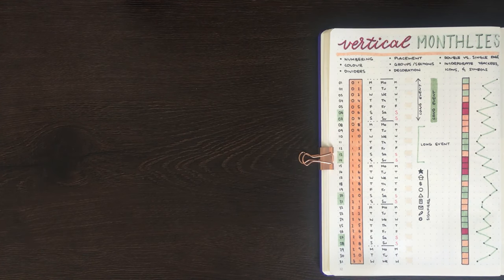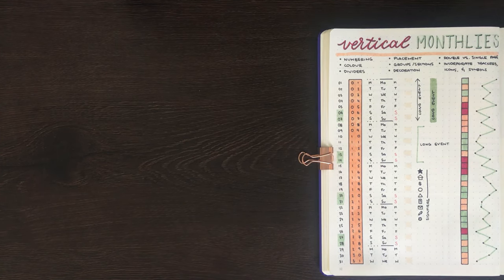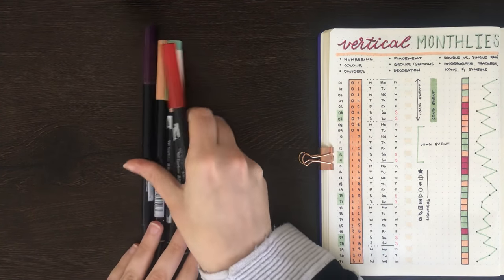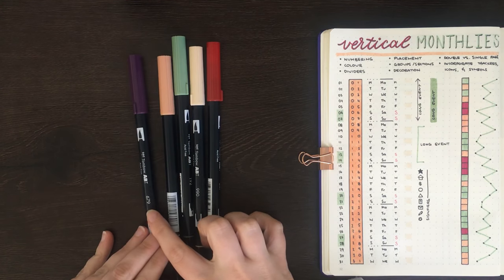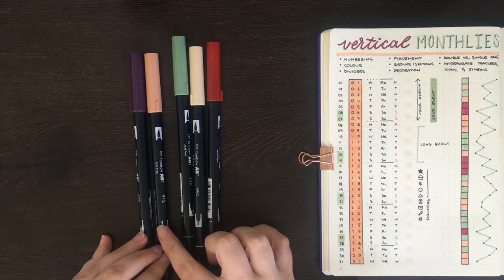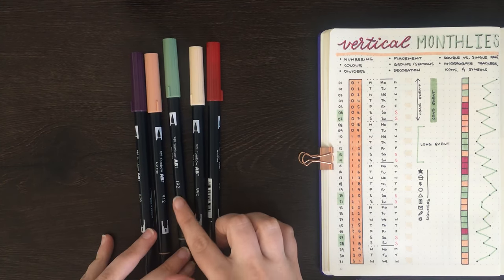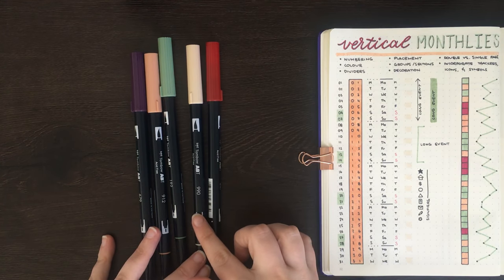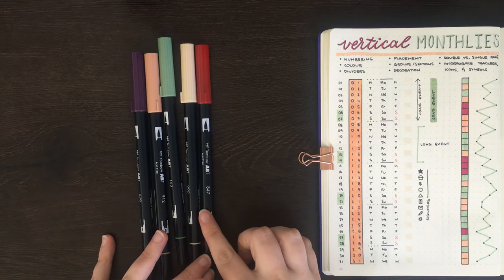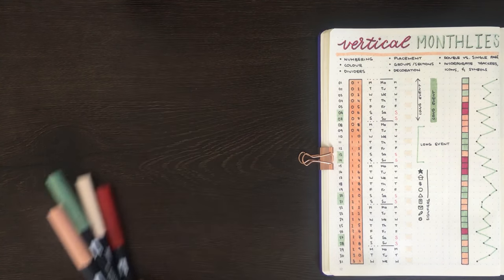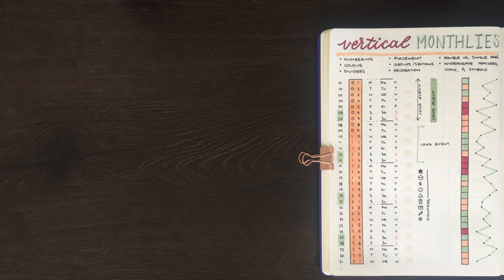For today's video, I'm going to be showing you 5 different styles of vertical monthly layout that you could use in your journal, and suggest some ways you could tweak them to make them more personalised. I'm using the colours I selected as part of the Oriental Spa colour palette from my bullet journal colour palettes video. Those colours were the 679 purple shade, the 912 which is a pinkish orange, the 192 which is a nice green, the 990 which is a cream colour, and the 847 red shade. Along with that, I'm going to be using my Faber-Castell Pitt Artist Pens and also some washi tape. Any equipment I use in today's video will be linked in the description box below.